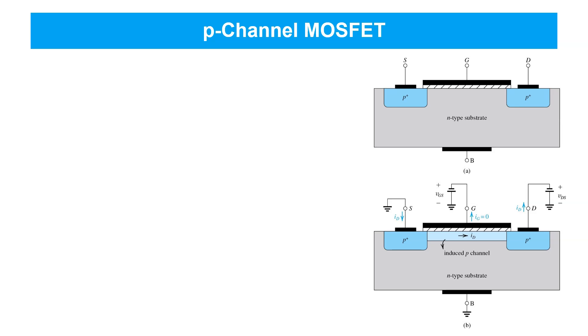Thus, strictly speaking, the threshold voltage for an enhancement mode PMOS device is negative and VGS must be lower than that in order to induce a channel.